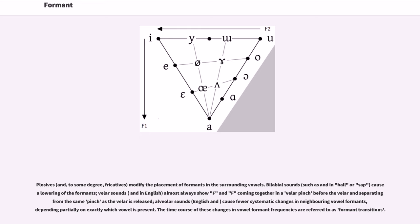Plosives, alveolar sounds, English t and d, cause fewer systematic changes in neighboring vowel formants, depending partially on exactly which vowel is present. The time course of these changes in vowel formant frequencies are referred to as formant transitions.